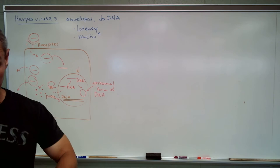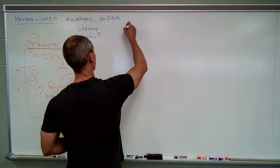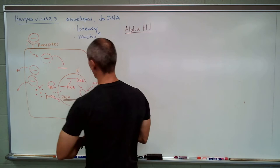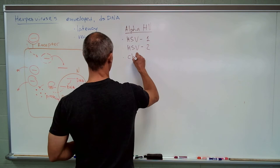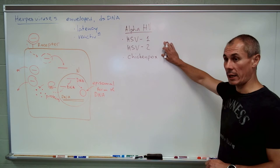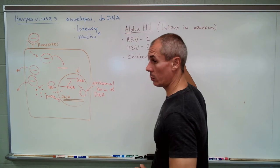There are three herpes virus types. The first we're going to talk about is alpha herpes viruses. There are three viruses in that category: herpes simplex virus 1, herpes simplex virus 2, and chicken pox. What's common between all three alpha herpes viruses is that they become latent in neurons — in different neurons, but in neurons nonetheless.